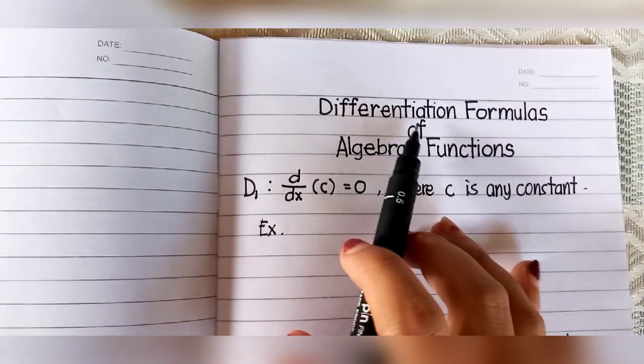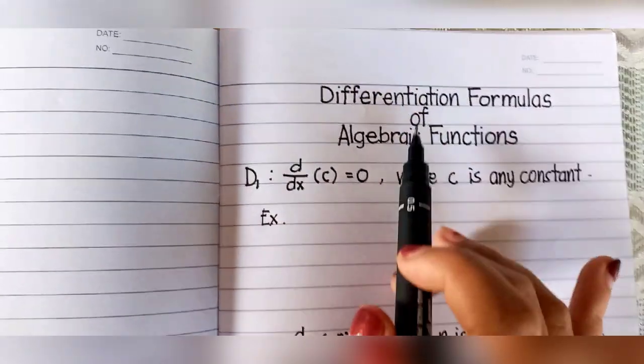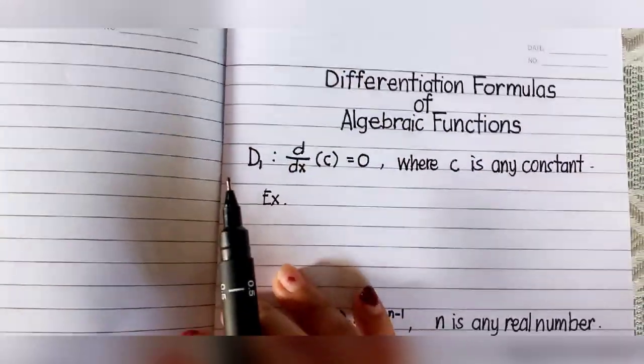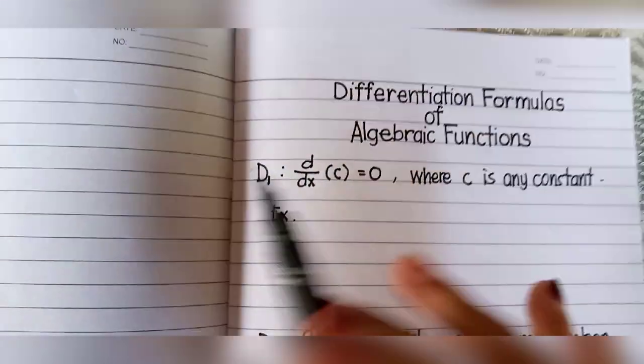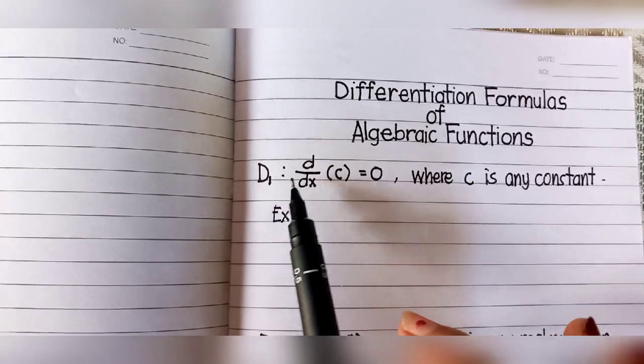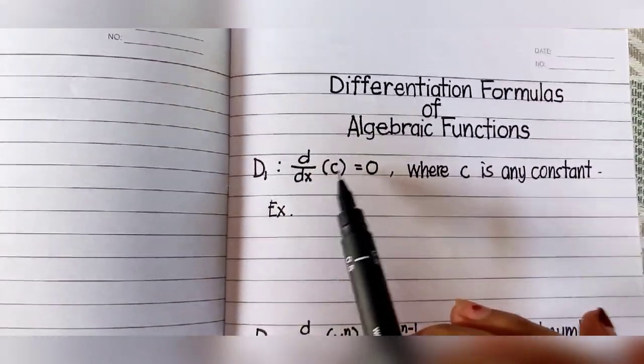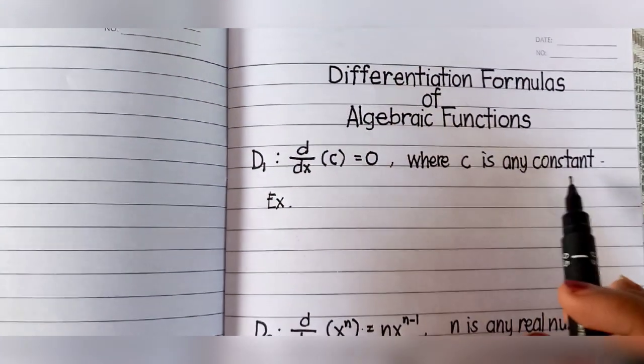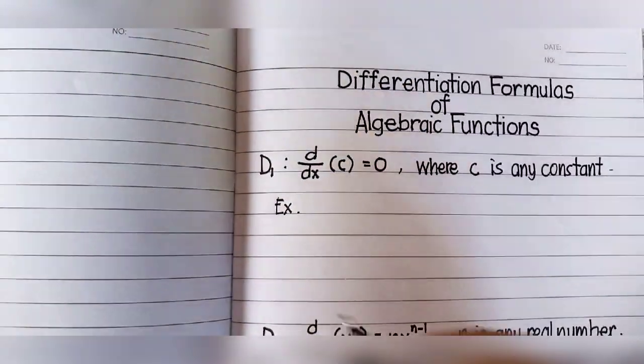Our topic for today is differentiation formulas of algebraic functions from D1 to D4. The first one is D1: d/dx of C equals 0, where C is any constant.